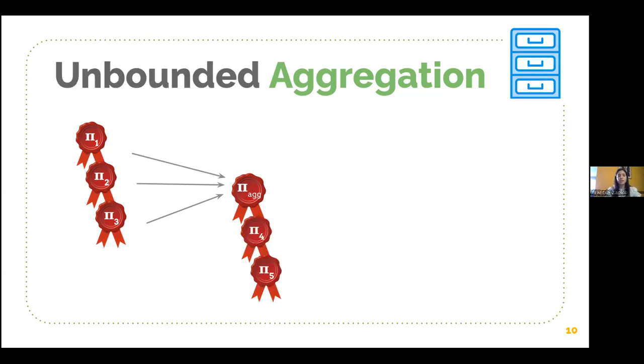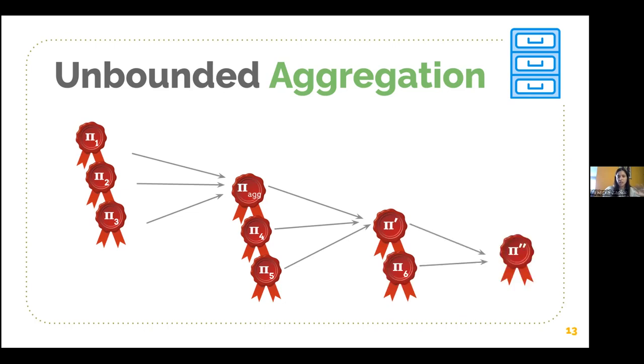Unbounded aggregation, as we define it, is the ability the prover has to keep this process going by adding new proofs and aggregating in a potentially infinite process. But it's important here that both prover and verifier can keep track of the aggregation history or can access the aggregation history.